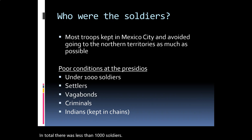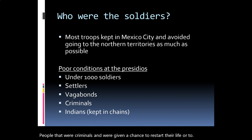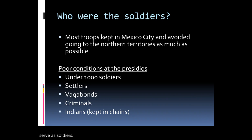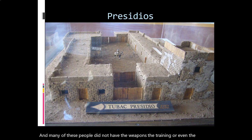In total there were fewer than a thousand soldiers, and the soldiers were also the settlers living in newly founded settlements. Some of these people were homeless individuals picked up in urban centers, or criminals given a chance to restart their lives on the frontier. In some cases, native people from other regions were brought in chains to serve as soldiers. Many of these people did not have the weapons, the training, or even the willingness to serve in these roles.